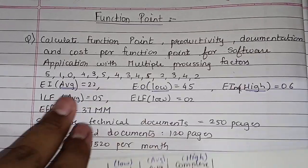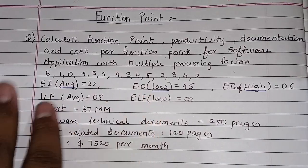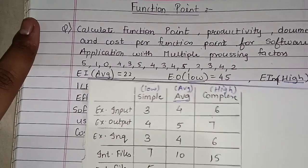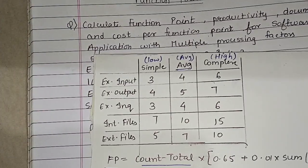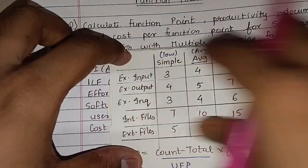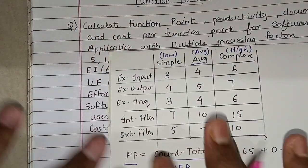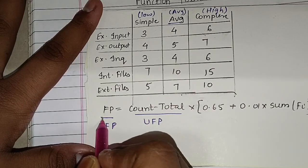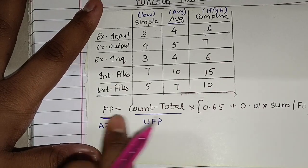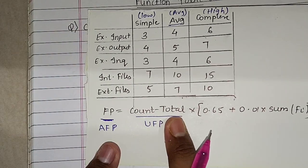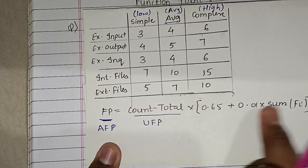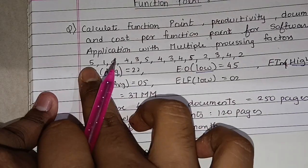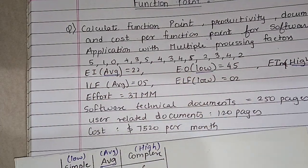In the exam, it can also be given as simple, average, or complex — no issue. We have to learn this table and based on it, solve in the exam. The formula for function point is: count total multiplied by (0.65 + 0.01 × sum of Fi), where sum of Fi is the summation of all 14 factors.